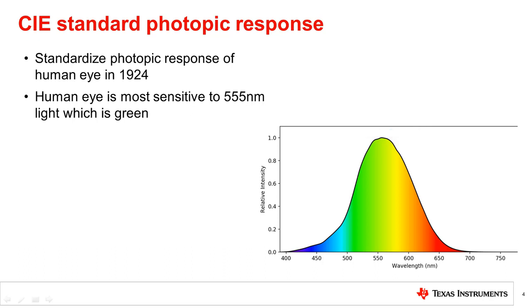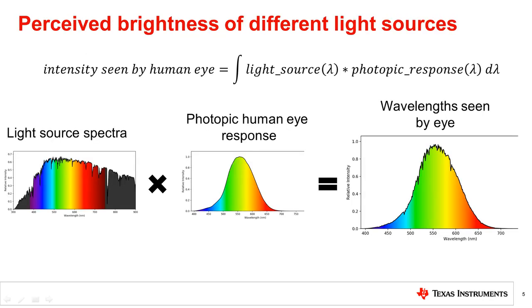This is the reason that the dot from a green laser pointer will appear brighter than the dot of a red or blue laser pointer of similar power. Recalling the spectra of light sources from the previous video, we can now use the photopic response to compute how the human eye will perceive the intensity of different light sources.